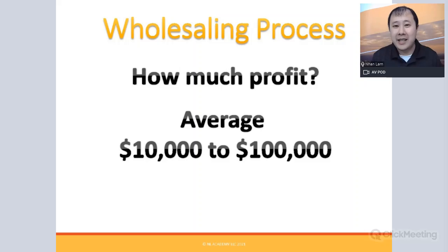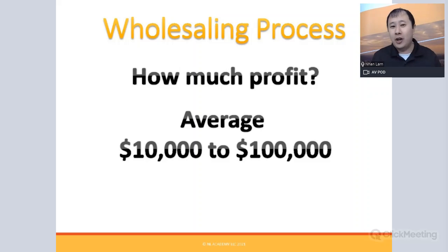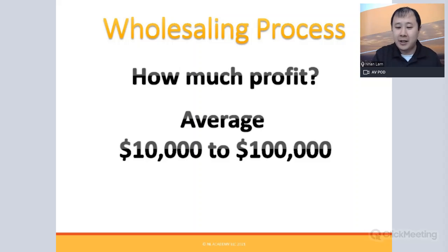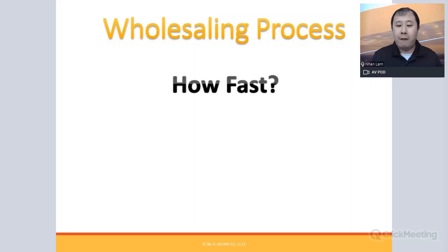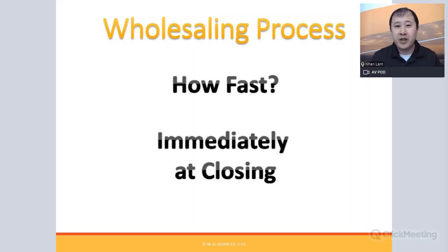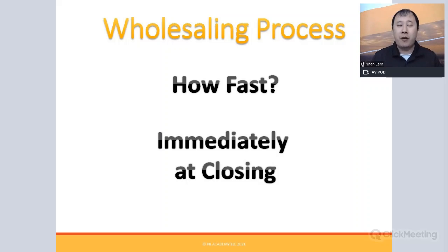Even if you're not getting six-figure deals, four or five deals at $20,000 each is also a six-figure income — one every other month. This is very achievable with a consistent system. And the money comes immediately at closing — you don't wait for the house to be renovated and sold. You get the wholesale fee when the fix-and-flip investor settles, then move on to the next deal.